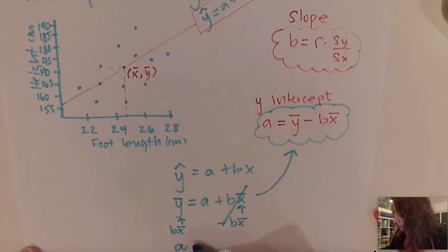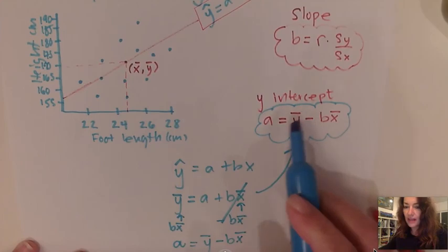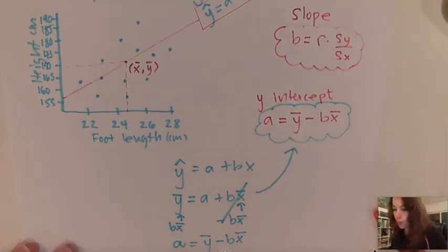we actually end up with this formula right here. So the y-intercept, which is our a value, is equal to the average of y minus the slope times the average of x when I bring everything to this side. That's actually how we get the y-intercept.